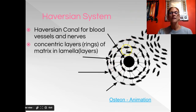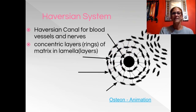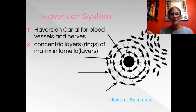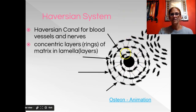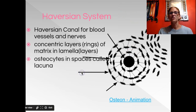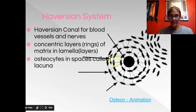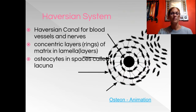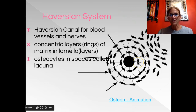Around the Haversian canal you see rings — these remind me of annual rings in a tree. You've probably seen a tree cut horizontally and seen the rings we can count to see how old the tree is. These rings are called lamella. This osteon has one, two, three lamella, and that's where the matrix that actually makes up the bone is found, arranged in circles.